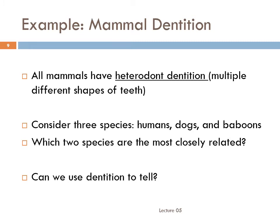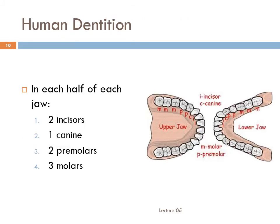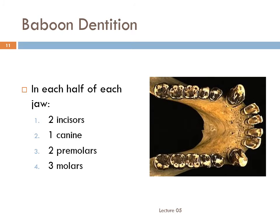For example, having multiple different kinds of teeth — a trait called heterodont dentition — is an ancestral trait of mammals. Saying that humans have four kinds of teeth: incisors, canines, premolars, and molars, doesn't tell us much about our evolutionary relationship with either dogs or baboons. Since they both also have heterodont dentition, we can say that we're related at some level, but not really which. We can't tell whether we're more closely related to baboons or to dogs. But let's look for a shared derived trait — how many of each kind of tooth? We see that we have two incisors, one canine, two premolars, and three molars in each half of each jaw. This is the dental formula for the human species. Humans and baboons both have this same formula: 2-1-2-3.